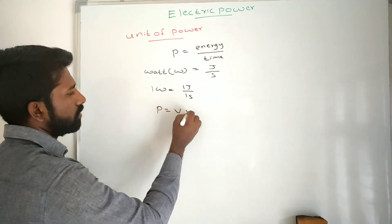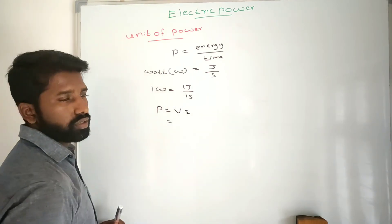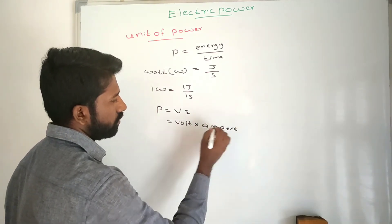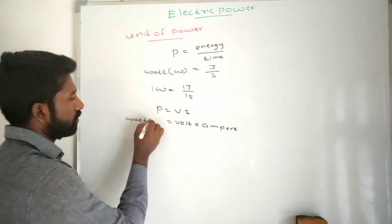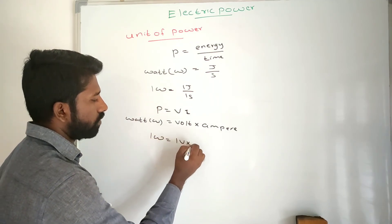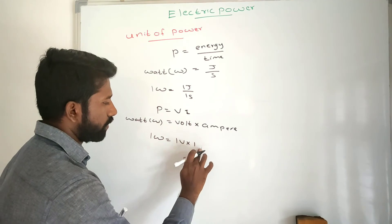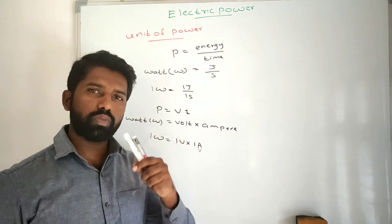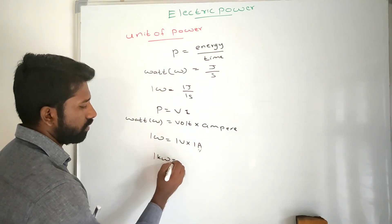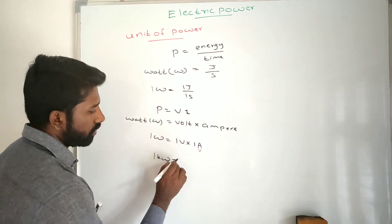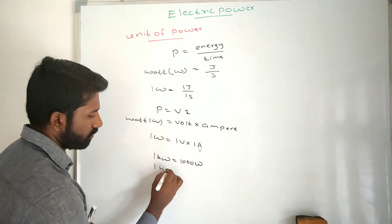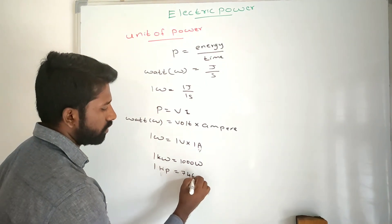Power also has the formula P = V into I, where V is the potential difference in volts and I is the current in amperes. Volt multiplied by ampere is also called watt. So 1 watt is equal to 1 volt into 1 ampere. The watt is a very small unit, so we use higher units. 1 kilowatt is equal to 1000 watt. And 1 horsepower is equal to 746 watt.